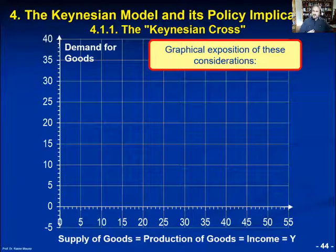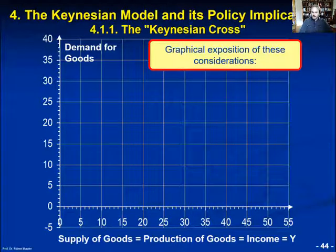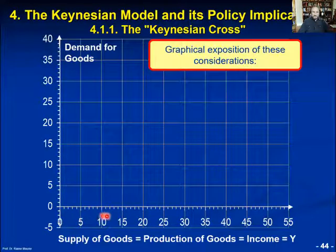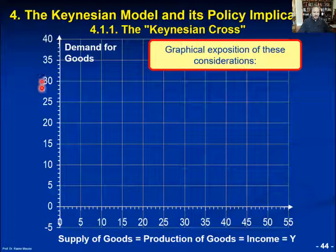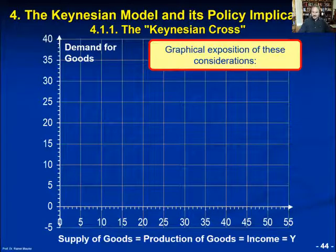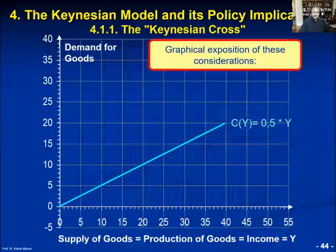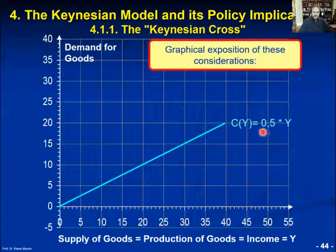Let's now transfer this mathematical solution to a diagram. As it will turn out, this diagram is in fact the Keynesian Cross. First, we represent the Keynesian consumption function graphically. We measure household income or GDP on the x-axis and the demand for goods on the y-axis. The Keynesian consumption function is a straight line which starts at the zero point of the diagram. The slope of this line is equal to the consumption ratio, 50%, or 0.5.